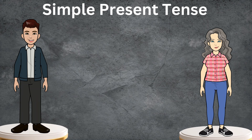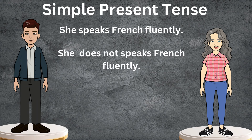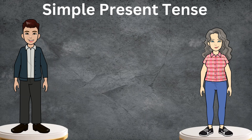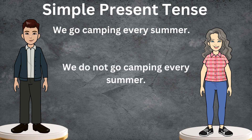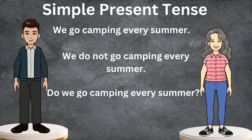Our new sentence is: she speaks French fluently. The negative sentence would be: she does not speak French fluently. Or: does she speak French fluently? Let's try a new one: we go camping every summer. The negative sentence would be: we do not go camping every summer. Or the interrogative one would be: do we go camping every summer?